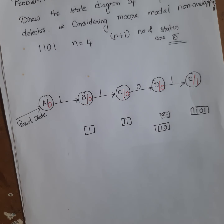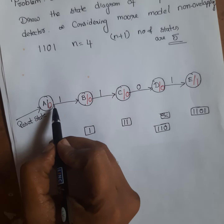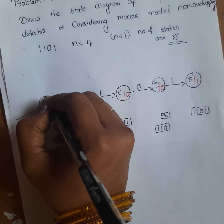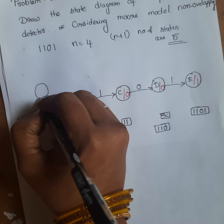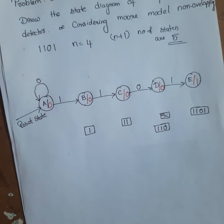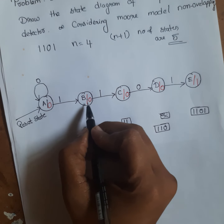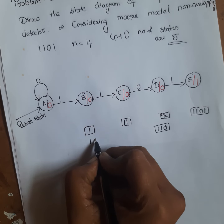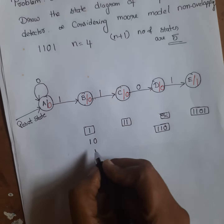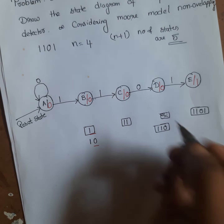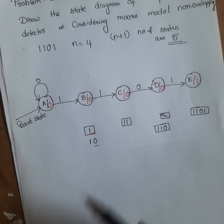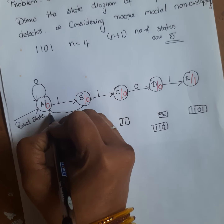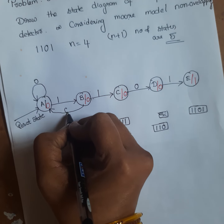We identify what happens when the input is 0 and when it is 1. For state A, when the input is 1, it goes to the next state B. For input 0, the sequence has not yet matched, so it remains in state A. For state B, when the input is 1, it goes to the next state C. When the input is 0, compare 0 with 1 — there is no match — so go to the reset state A.